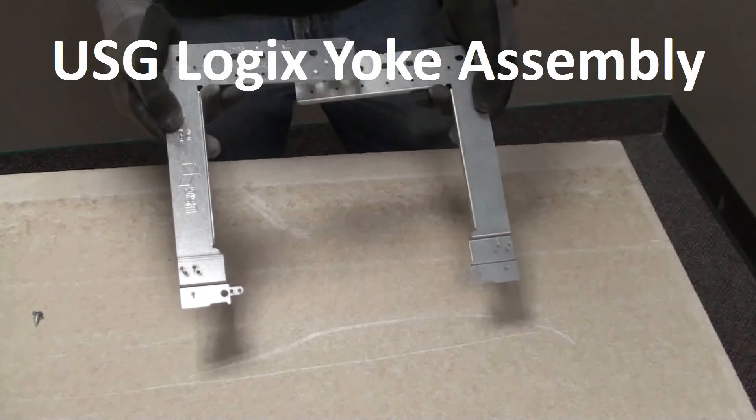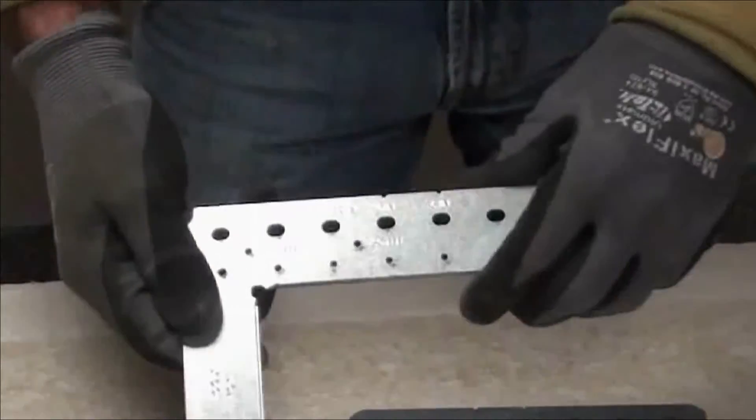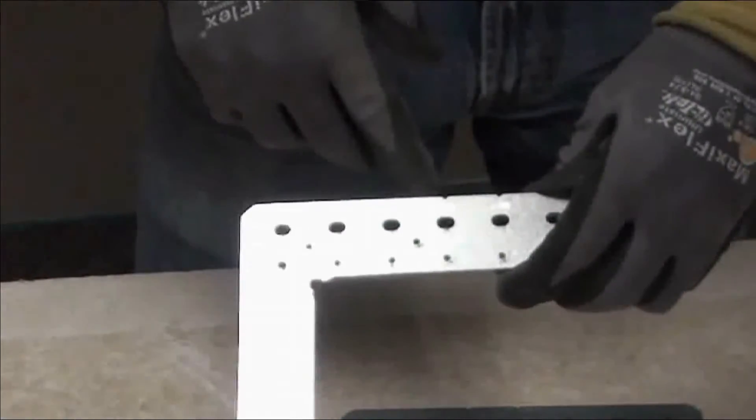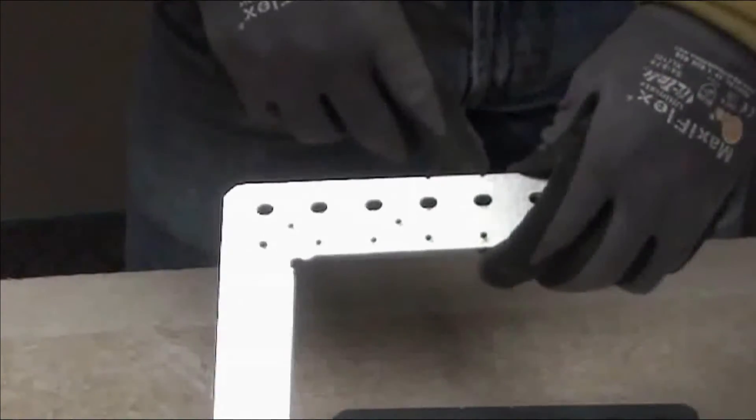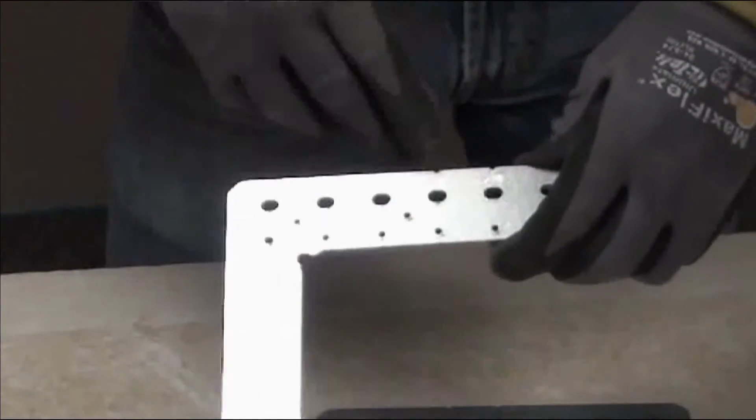The innovative USG Logix yoke is produced in two parts to allow it to be used with 4-inch, 6-inch, and 12-inch utility channels, as well as 100, 150-millimeter, and 300-millimeter utility channels.